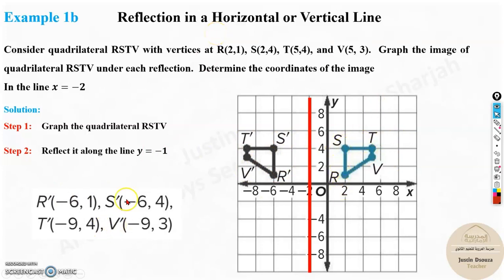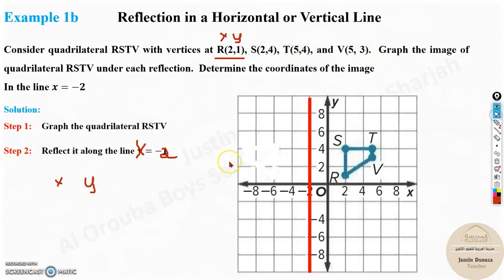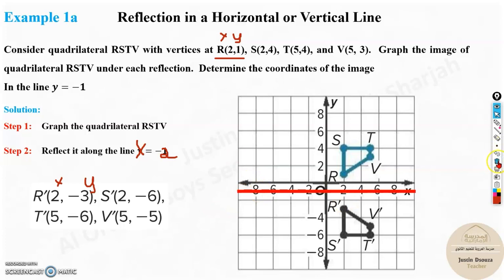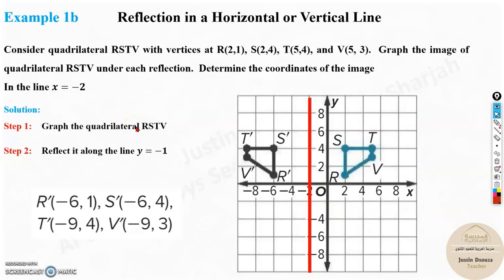You can compare this for the reflection along line x equals -2. For x equals -2, remember, the y values don't change. What is the y value in this coordinate? Let's say R. X is 2, y is 1. See, it'll be the same. X is different, but y will be the same. All the y values remain the same. Even in the previous case, x values were the same, only the y value changed, because you're reflecting along the x-axis where y equals -1.